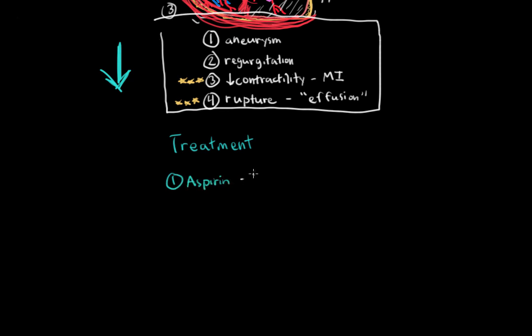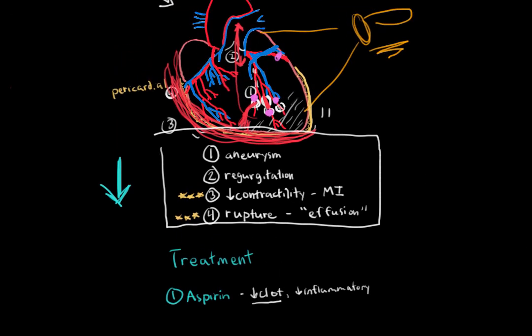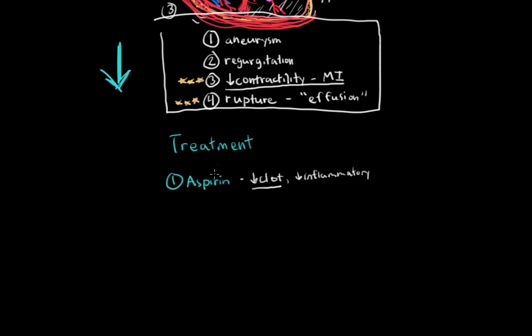By inactivating platelets that cause clots, we decrease inflammation. Now the decrease of clot formation is extremely important. Because going back, remember we have a lot of clots being formed, and this can lead to the severe heart attack or myocardial infarction. So preventing clot formation can prevent the irreparable damage of a heart attack.